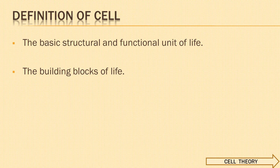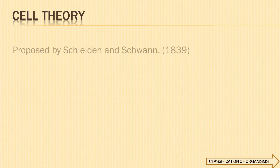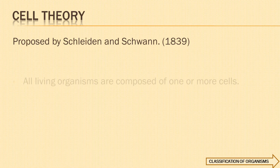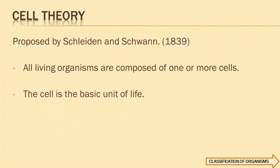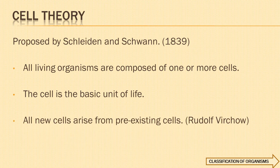The human body has trillions of cells. Just think how systematically they are organized to carry on with the life activities. Next, we come to cell theory, which was proposed by Schleiden and Schwan in the year 1839. They stated that all living organisms are composed of one or more cells, and the cell is the basic unit of life. Rudolf Virchow added a new dimension to the cell theory.